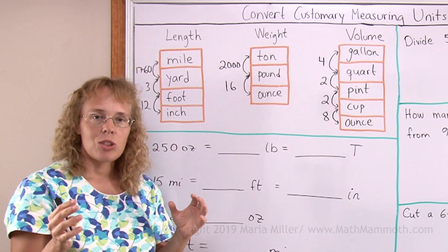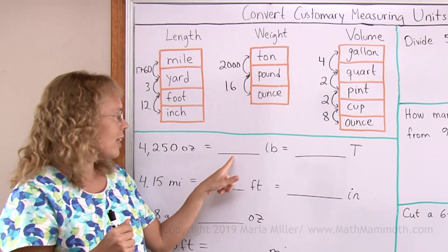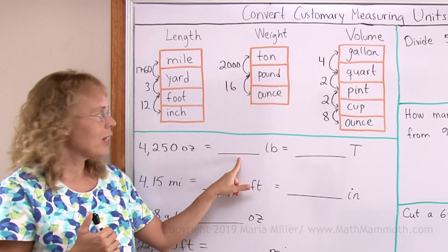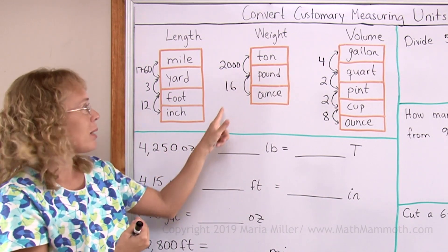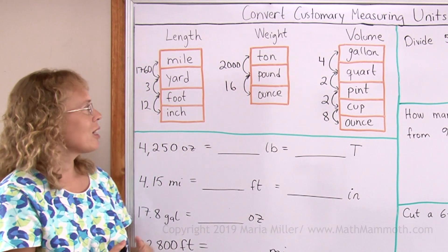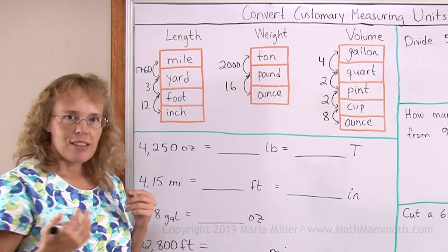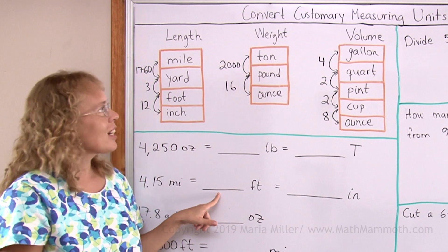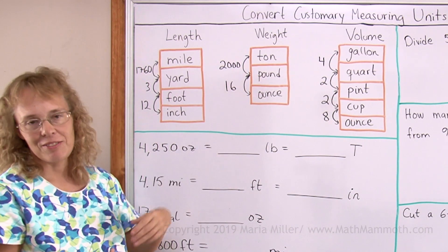Pounds are bigger units, so you need fewer of them, right? So you need a smaller number here. Therefore you will divide by 16. And that reasoning will always work. Whenever you're changing between two units, think whether you will need a bigger or smaller number. Then that will tell you whether you need to multiply or divide.